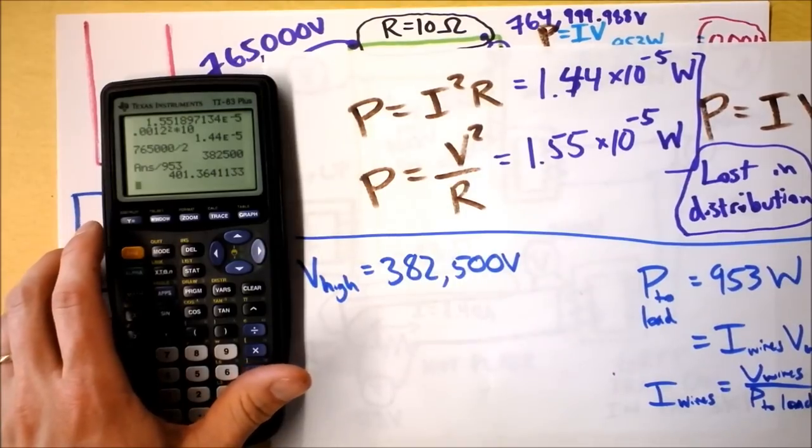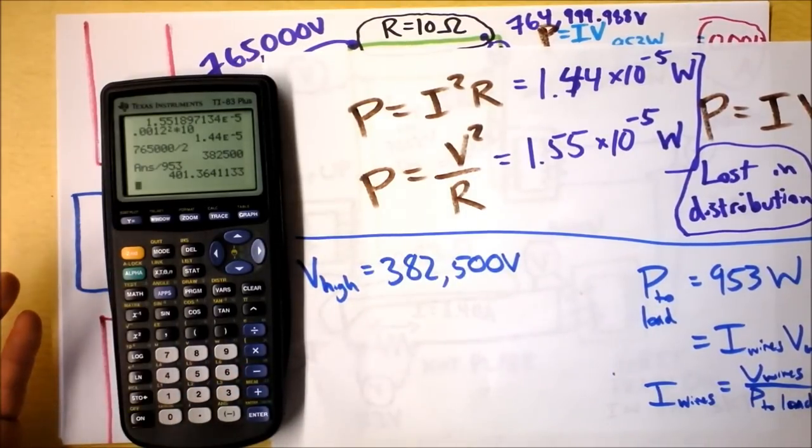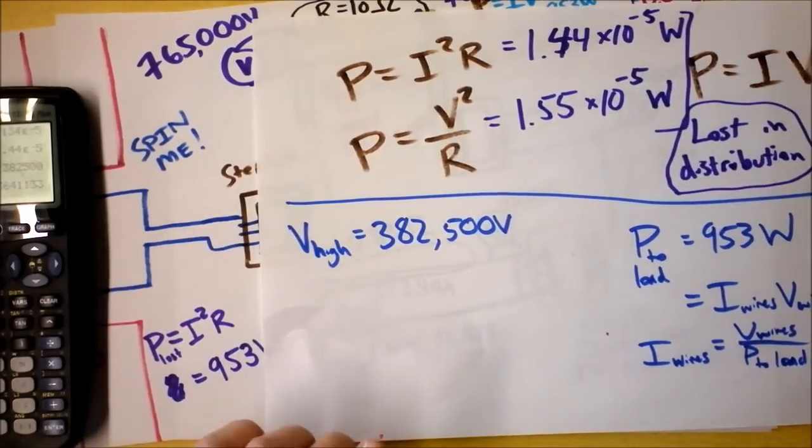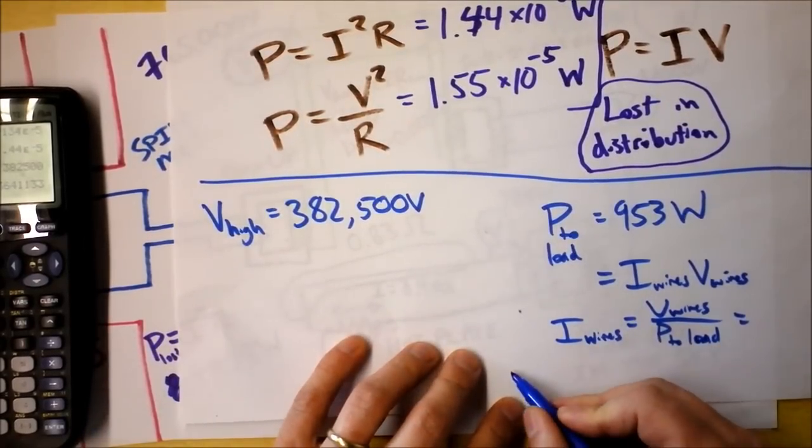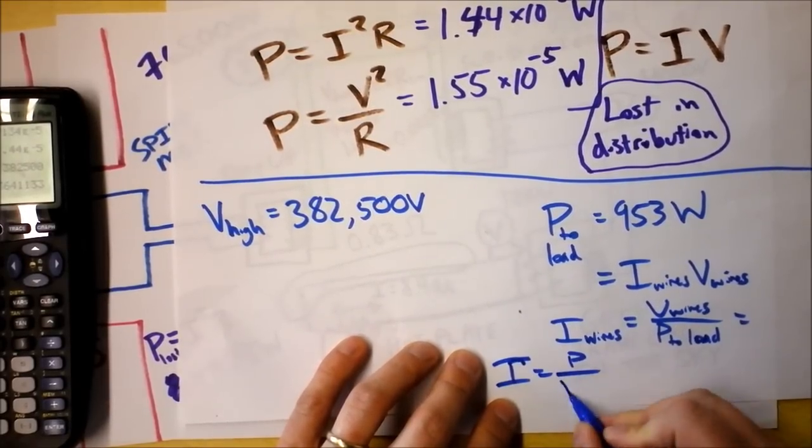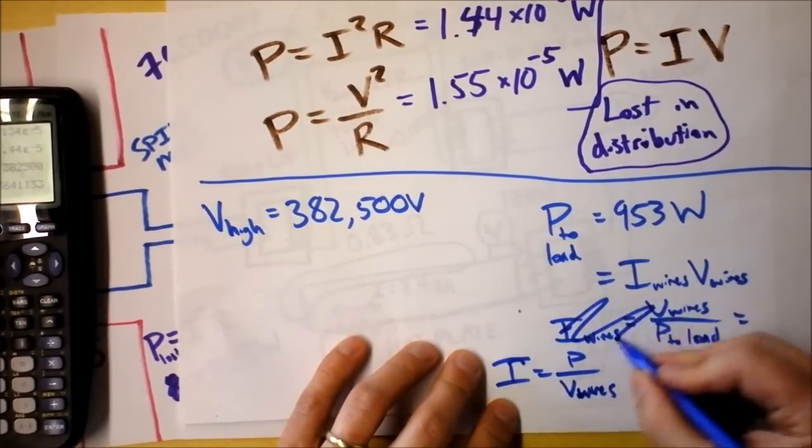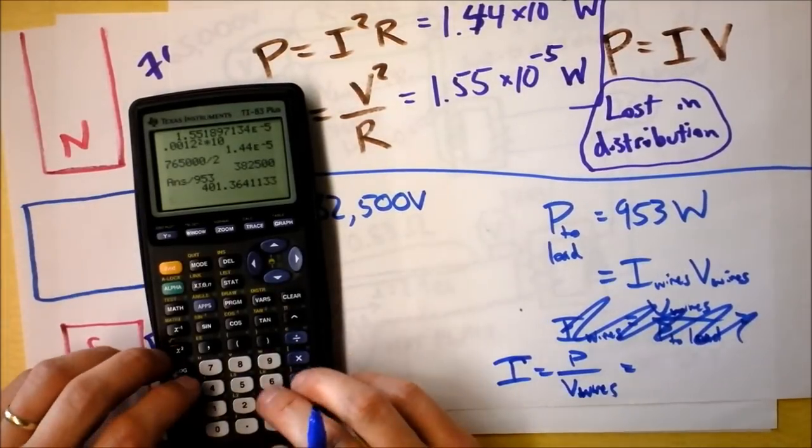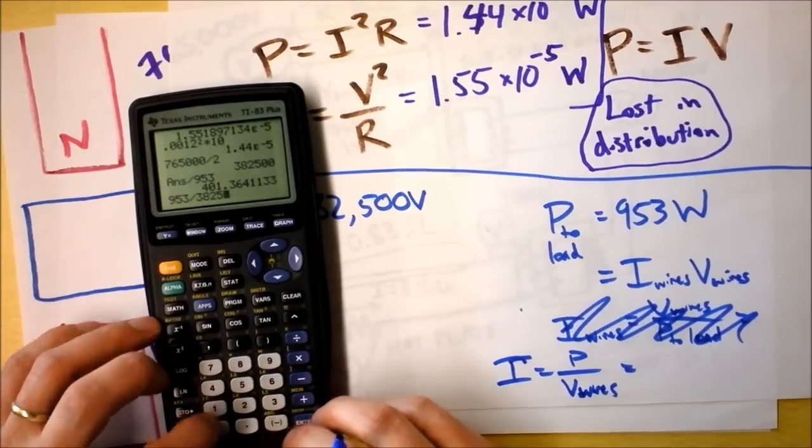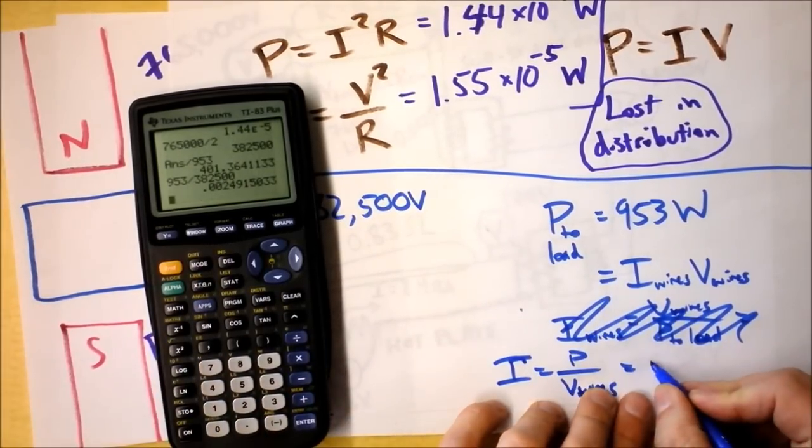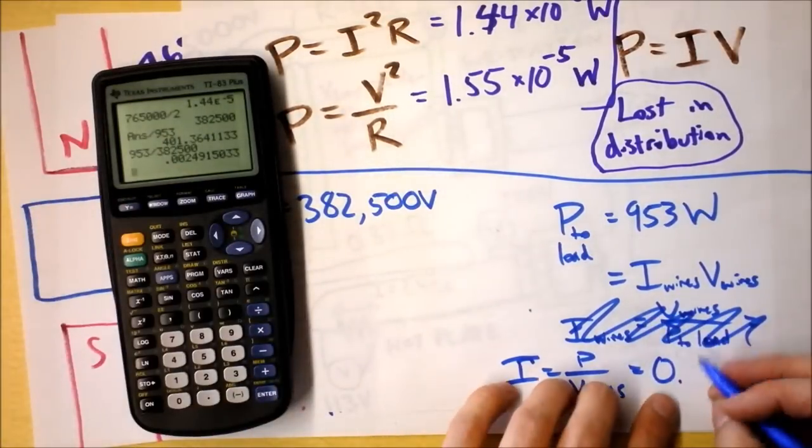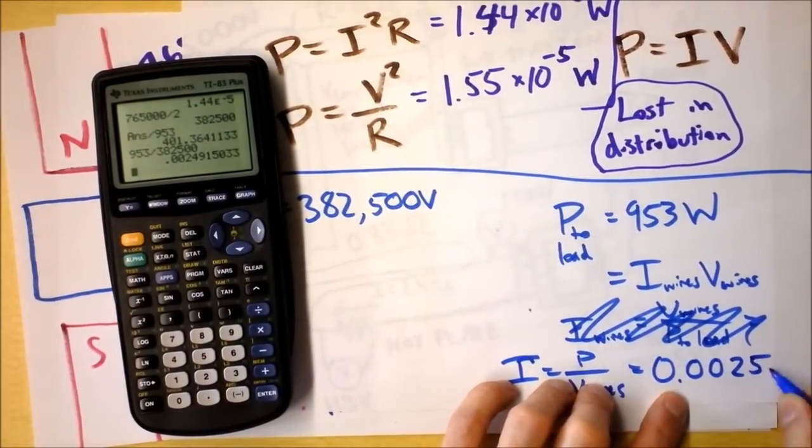How about I do algebra correctly? I'm going to find that the current is actually the power divided by the voltage of the wires. I can take 953 and divide it by 382,500. And I get a current that is just as expected, twice as what it was before. The current in my high voltage line, that 382,000 volts, is 0.0025 amps.